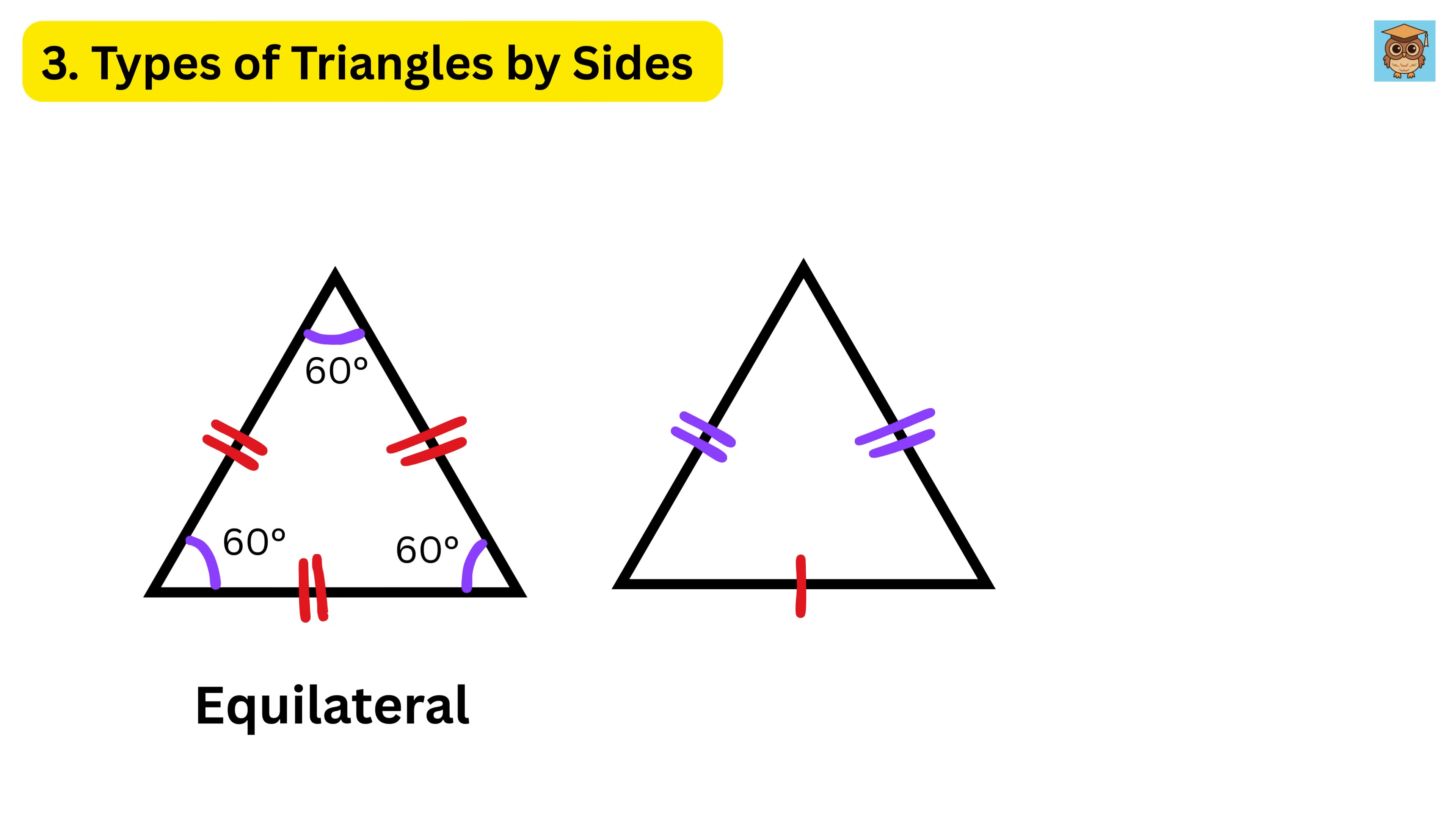If only two sides are the same length, it is called an isosceles triangle, and the angles opposite these sides are equal. If all three sides are different, it is called a scalene triangle, and all the angles are different.